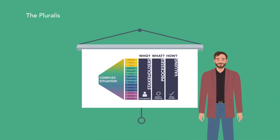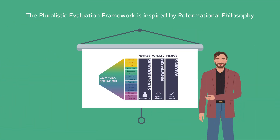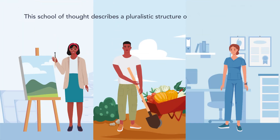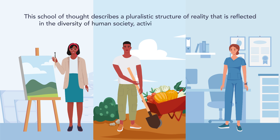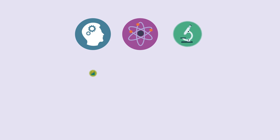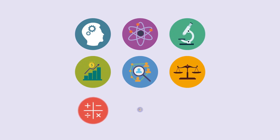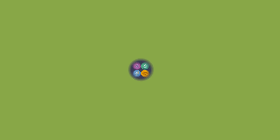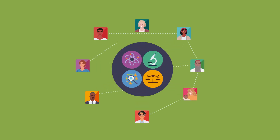The pluralistic evaluation framework is inspired by reformational philosophy. This school of thought describes a pluralistic structure of reality that is reflected in the diversity of human society, activities and values in everyday life. This same structure is also described by diverse academic disciplines, from physics to social sciences and law, providing a strong connection between stakeholders' experience of a situation and scientific insights that can help address it.